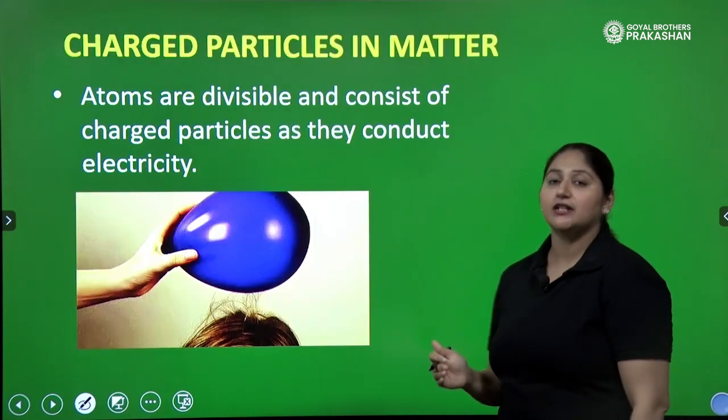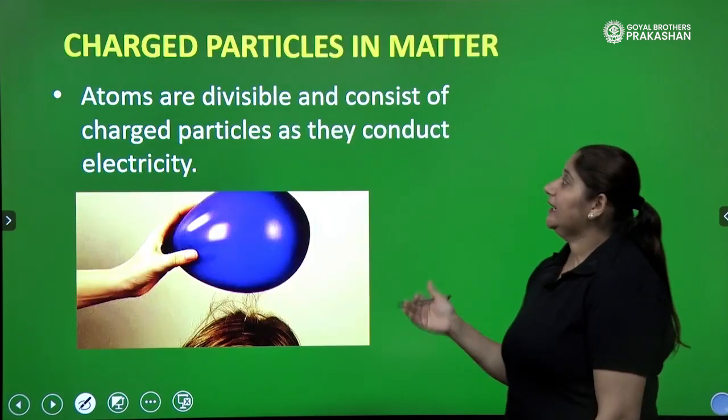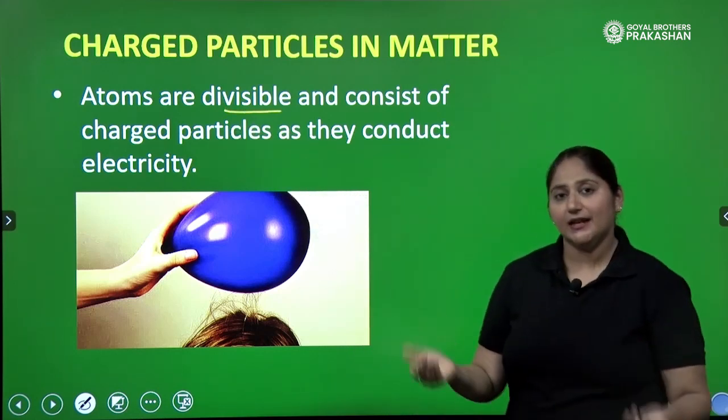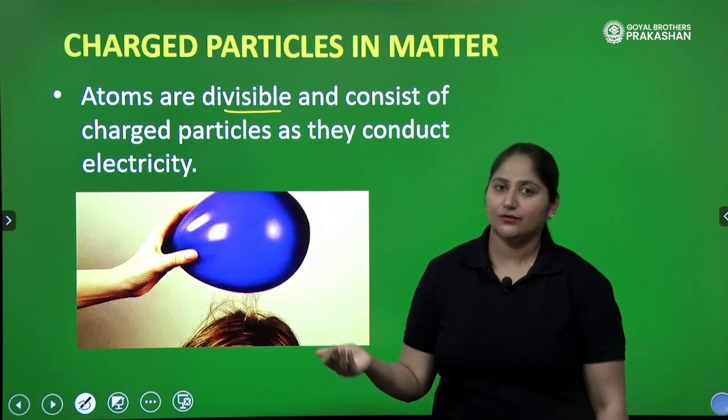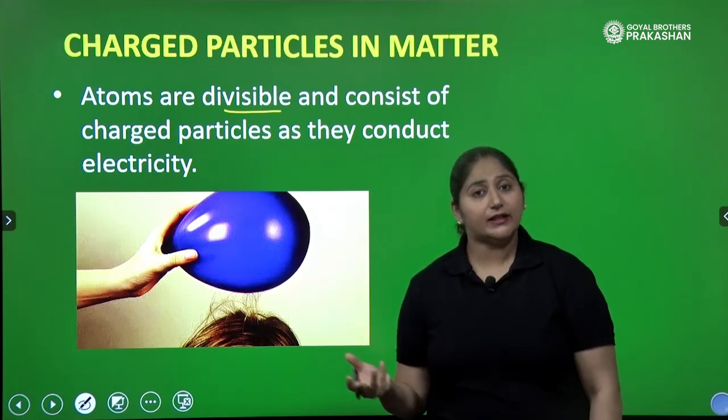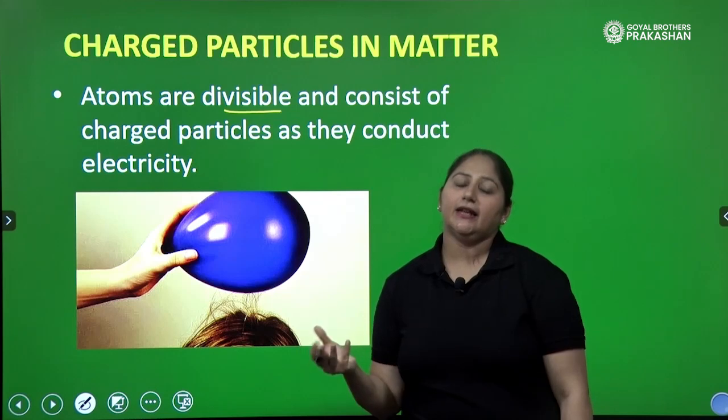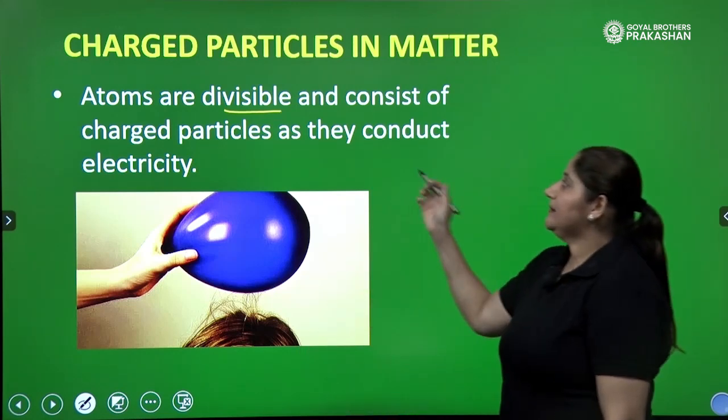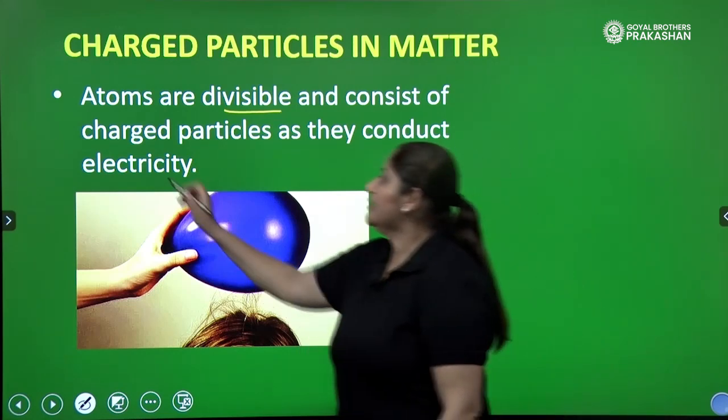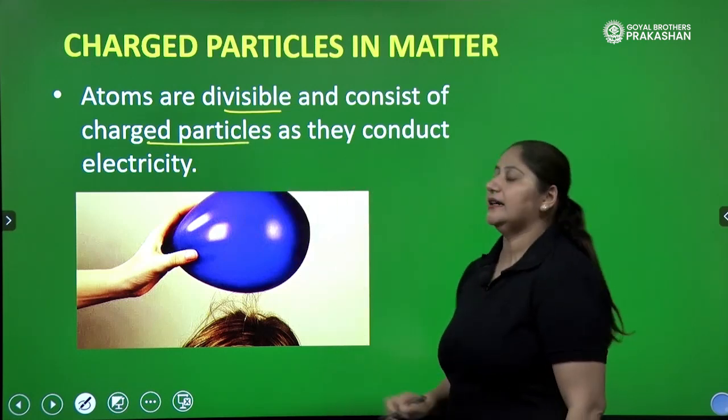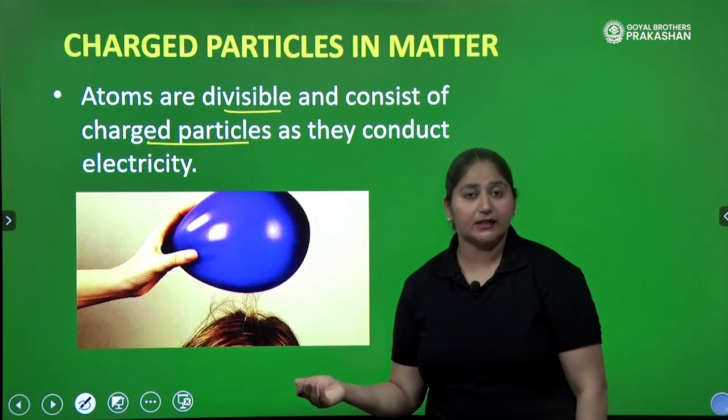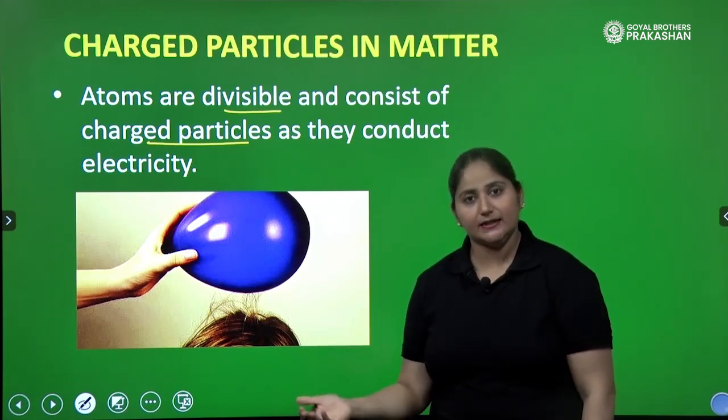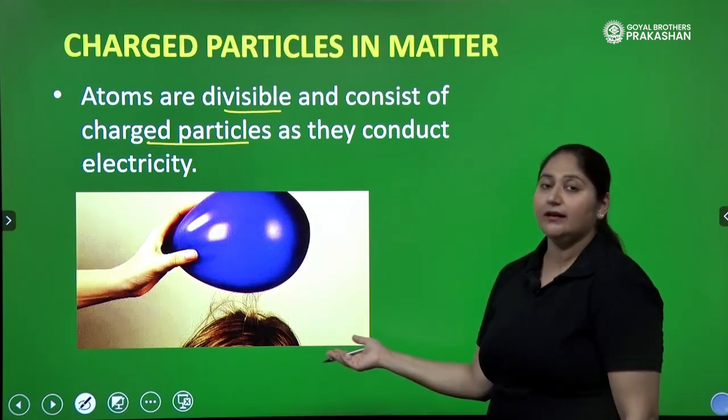We will discuss the activity in order to understand. There are charged particles in matter and atoms are further divisible because they contain charges. Atom is neutral. Every atom is neutral. But how there is a charge possible in an atom? Atoms are divisible and consist of charged particles as they conduct electricity.